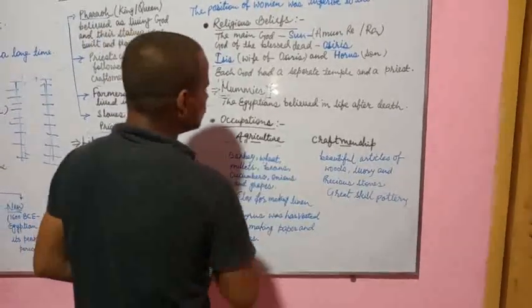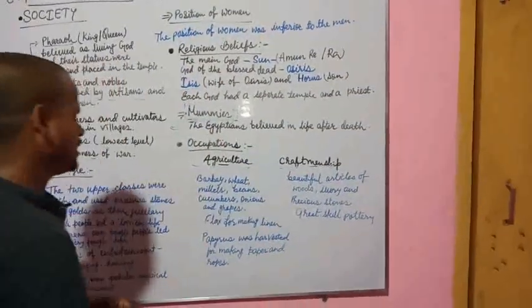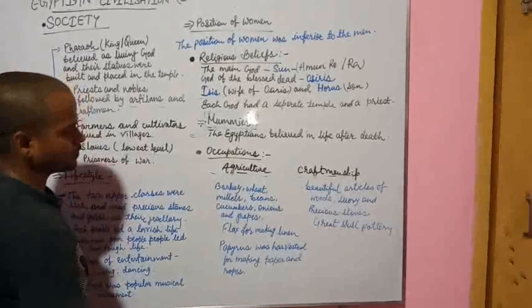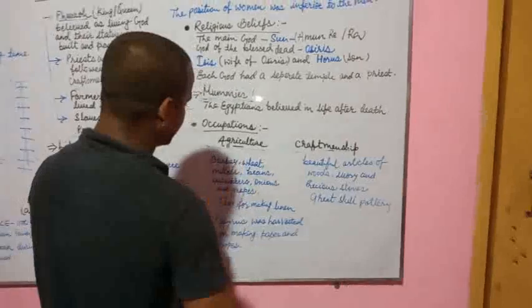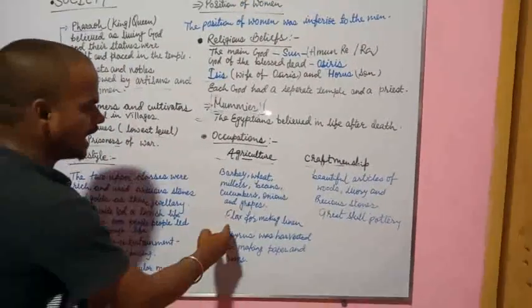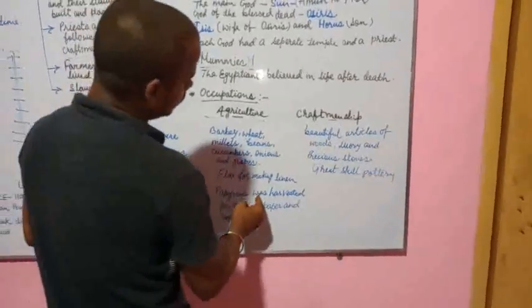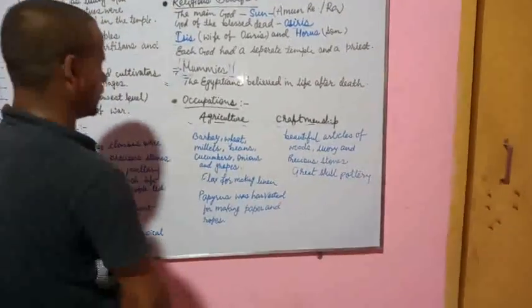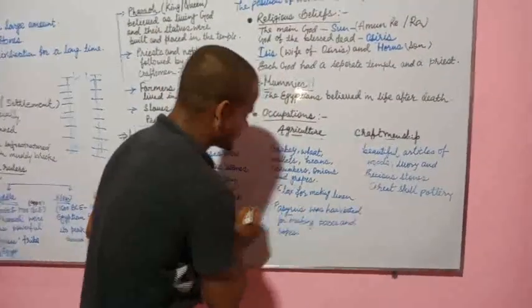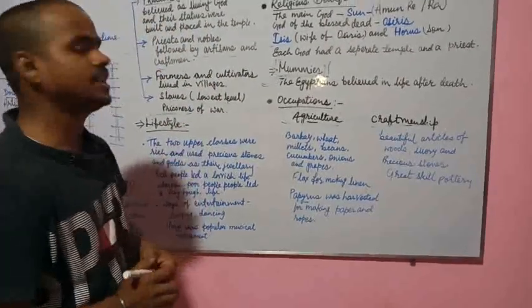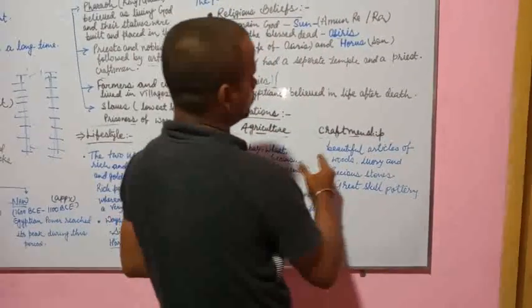Occupations. Agriculture was considered as the main occupation. Barley, wheat, millet, beans, cucumbers, onions and grapes were grown. Flax was grown for making linen and papyrus was harvested for making paper and rope.